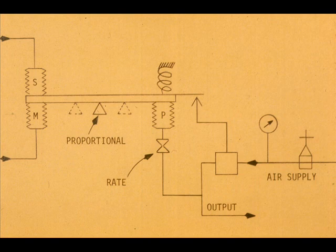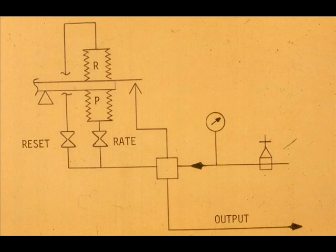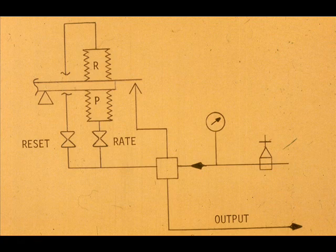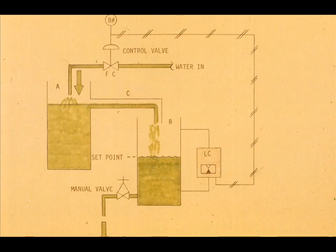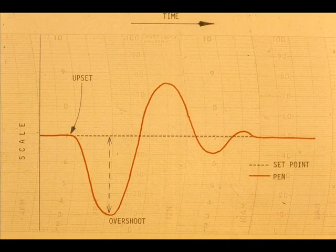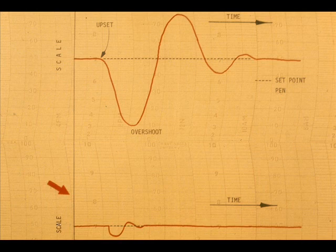A controller may have proportional plus rate, or it may have proportional plus rate and reset. Whereas the measurement or response curve for our hypothetical process may look this way without rate action, it can look this way with the addition of rate. By advancing the control valve action, the overshoot is reduced.